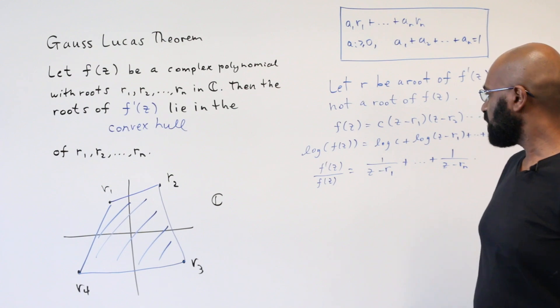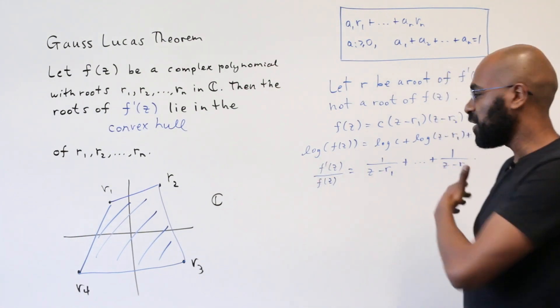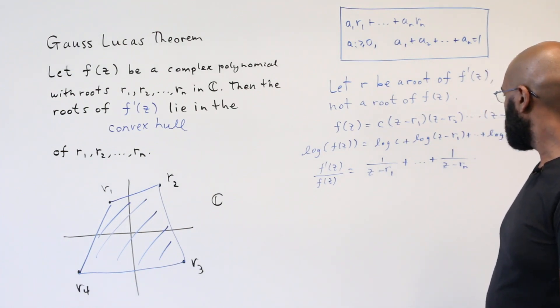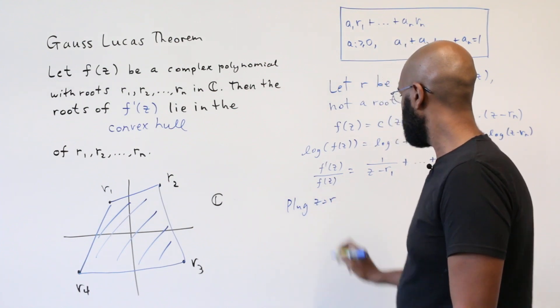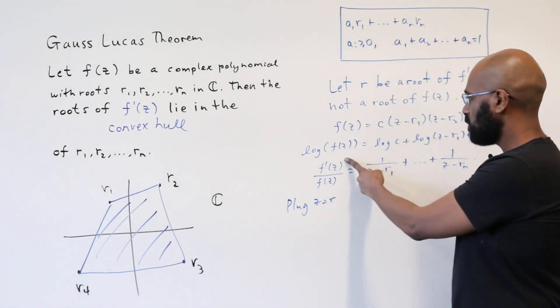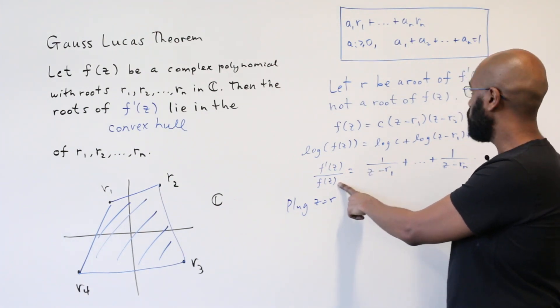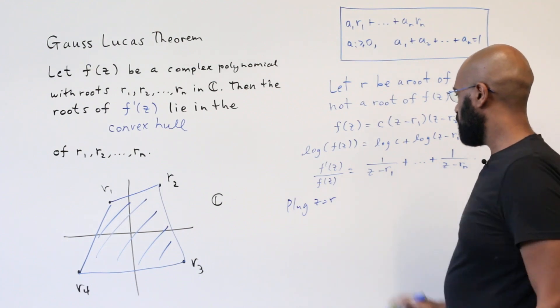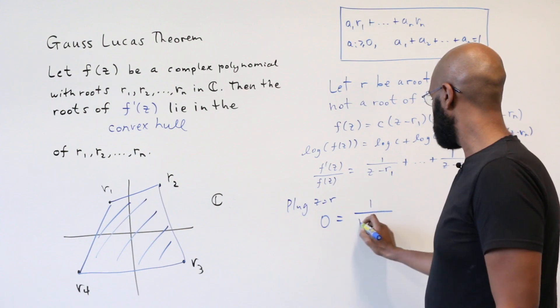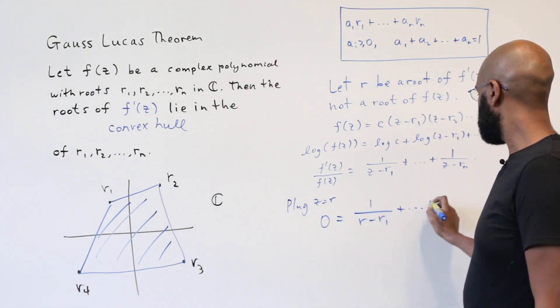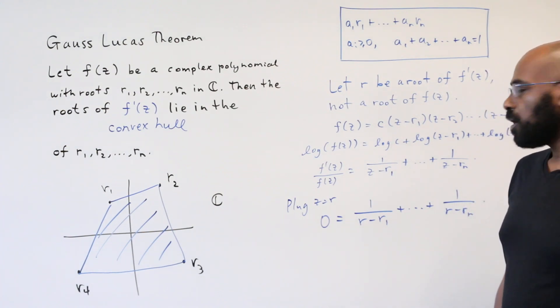So the reason to even consider something like this is that we have information about both f prime and f of z, so you can do something with this expression. In particular, if we plug in z equals r, r is a root of f prime of z. f evaluated at r is non-zero because r is not a root of f. So here we get 0. And then here we have 1 over r minus r1 plus et cetera 1 over r minus rn.